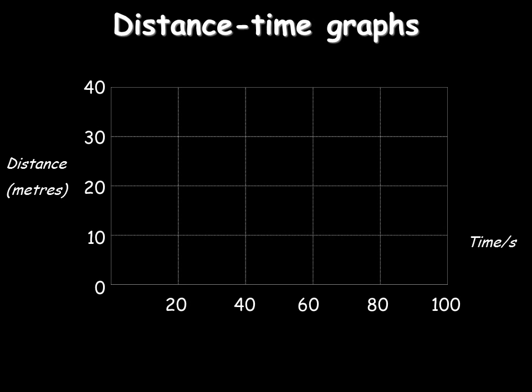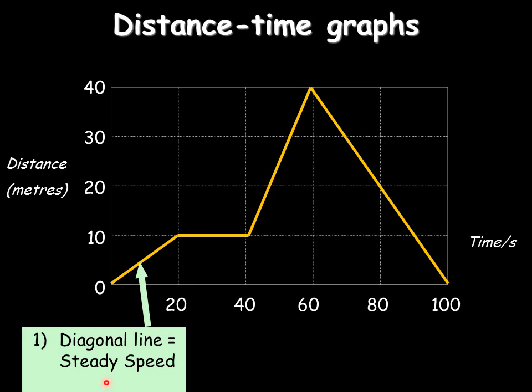You need to know all about distance-time graphs and speed-time graphs. The distance-time graphs are slightly easier, so I'm just going to draw one here for you to have a look at and consider. If you look at this first section here, you can see it starts at a distance of 0 and goes up to 10 in 20 seconds. Because it's a straight line, it means it's got a steady speed.